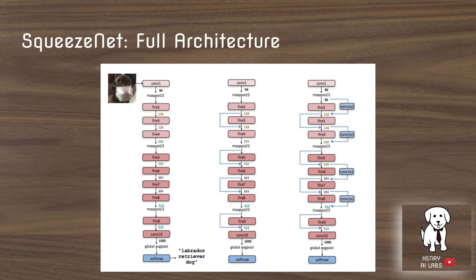The full architecture takes an input image, applies a convolution, max pool, and then a series of Fire modules. The middle and far-right variants shown add ResNet-style skip connections into the SqueezeNet architecture.